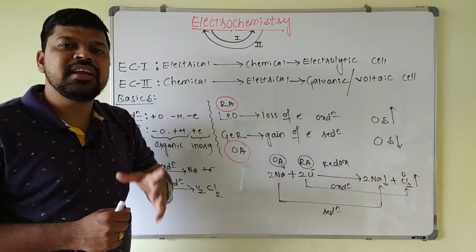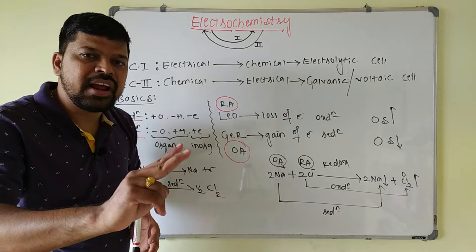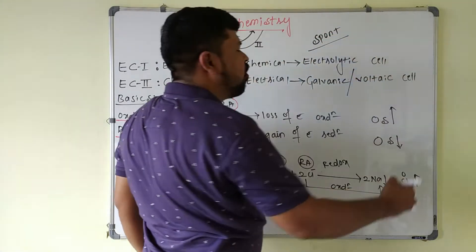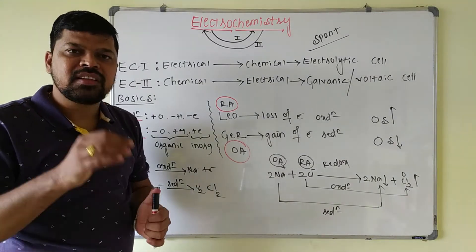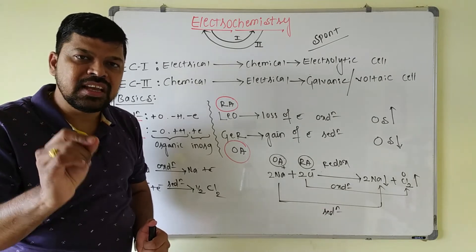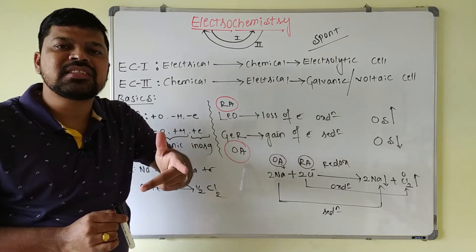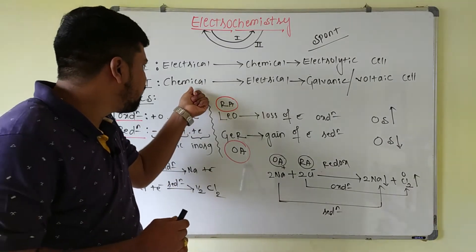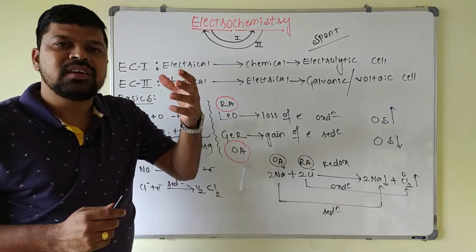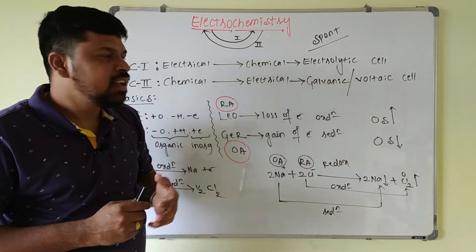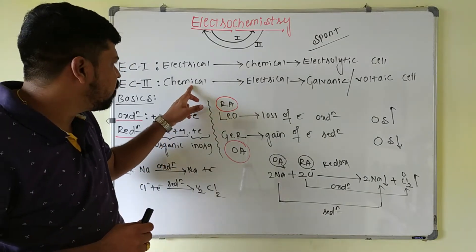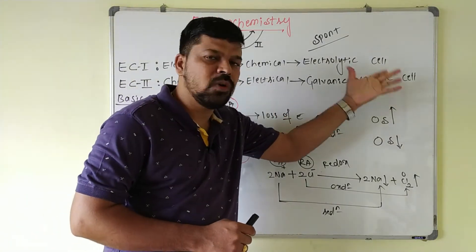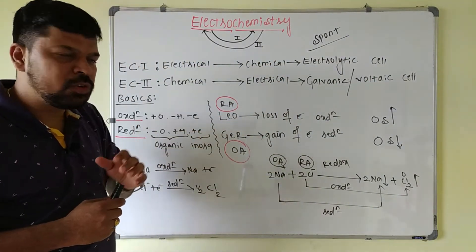In the galvanic cell process, the energy released during a spontaneous redox reaction is utilized to convert into electrical energy. A spontaneous process is one which proceeds with a decrease in energy. All redox reactions are spontaneous processes during which some amount of energy is released. That energy released, which we call Gibbs free energy, is utilized to convert into electrical energy. Before starting these two processes, we should know some basics about redox reactions.